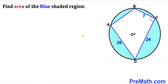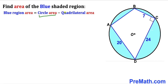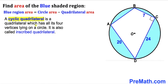Let's get started. Our very first observation is that the area of the blue shaded region equals the area of the circle minus the area of quadrilateral ABCD. Therefore, our task is to calculate the area of the circle and the area of quadrilateral ABCD.